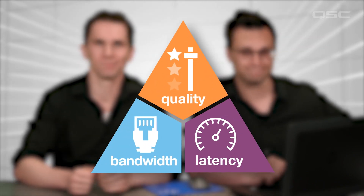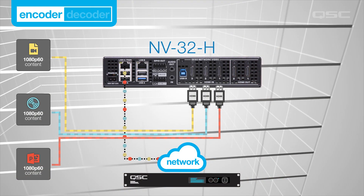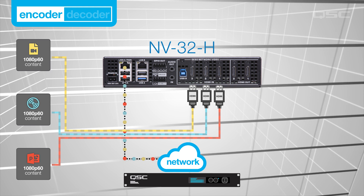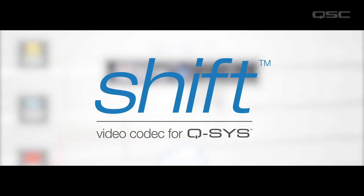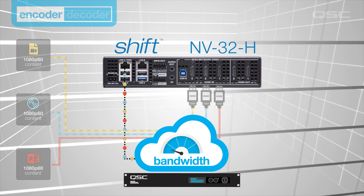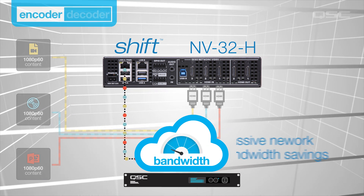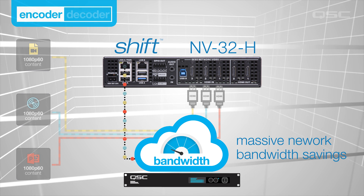The other really cool thing about the NV Series is its codec — the way it handles compression and decompression. If you know anything about video distribution, especially for the meeting room, you know that you're always trying to strike a gentle balance between quality, bandwidth, and latency. You probably also know that IT personnel are sometimes cautious about putting video on the network for fear that it will gobble up bandwidth unnecessarily. However, the NV Series uses QSC's proprietary video codec called Shift, which dynamically adjusts the network bandwidth required based on the content being displayed, affording massive network bandwidth savings for most common meeting room installations.